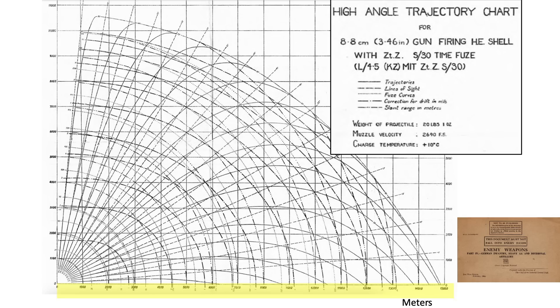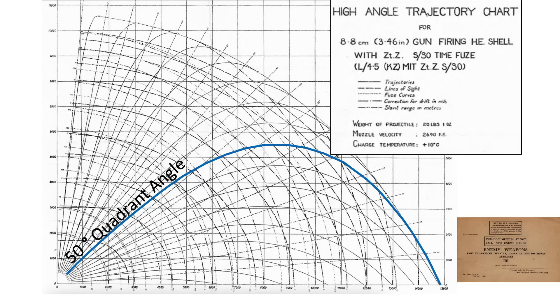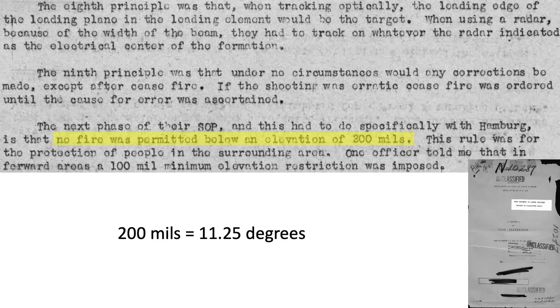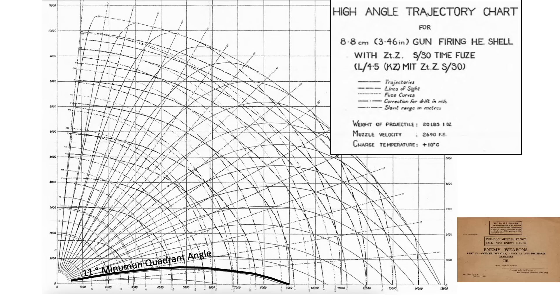The x-axis shows horizontal distance from 0 to 15,000 meters and the y-axis vertical distance from 0 to 11,000 meters. The solid lines show the 88mm projectile's trajectory based on the gun's elevation angle — for example, at a 50 degree quadrant angle, the projectile follows the corresponding path. The maximum elevation is 85 degrees, while the minimum permitted elevation was 200 mils or 11.25 degrees, as discussed in a 1945 Headquarters USSTAF document titled Minutes of Flak Conference. This minimum elevation is required to reduce ground structural damage or civilian casualties in urban areas, creating dead zones in certain shaded areas.